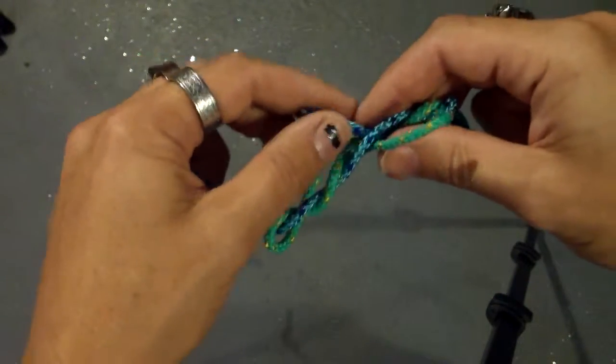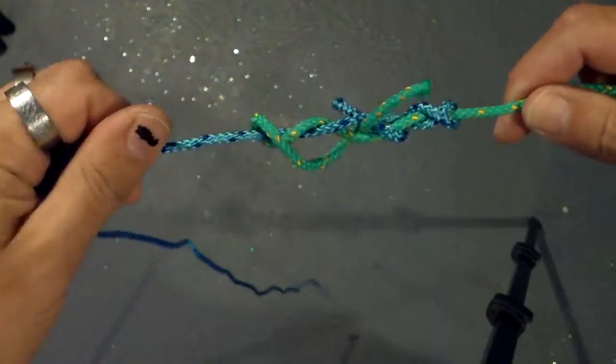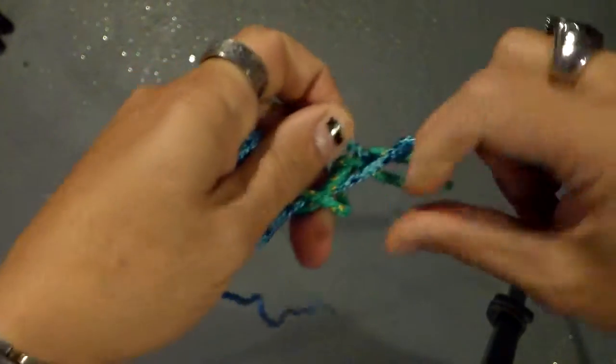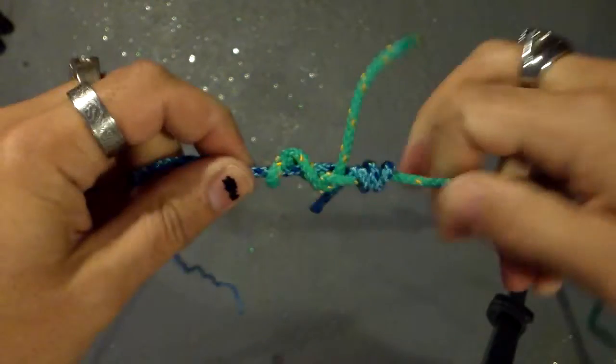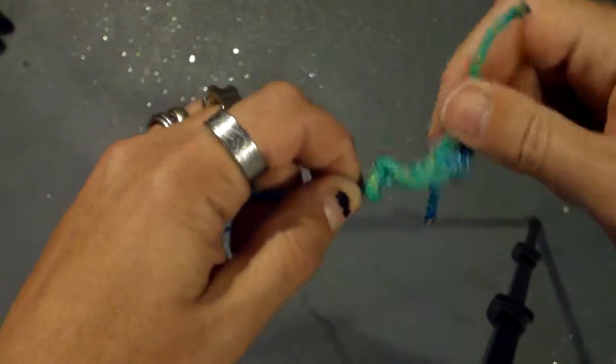Then you're going to take it and cinch it up, pulling on the tag end and your main lines as the knot tightens down.